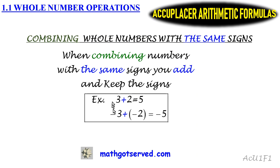what you're going to do is add the numbers 3 and 2. 3 plus 2 is 5, but you retain their signs, their identical signs which is negative in this case, so your result will be negative 5 upon combination.